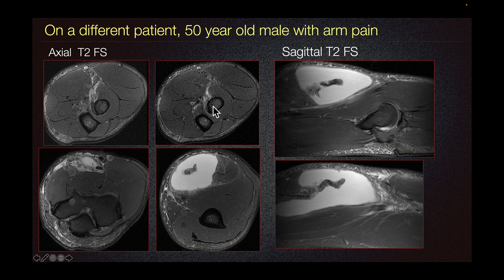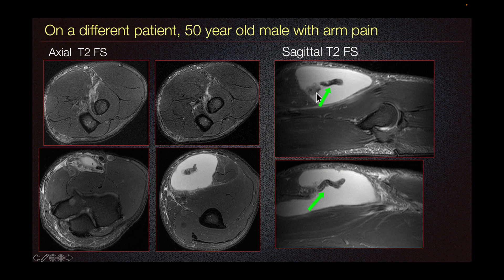Going proximally, we still don't see it. At the level of the elbow joint, we just see a lot of fluid and edema. At the level of the distal humerus, we can see a hypointense band surrounded with large fluid, likely a hematoma, consistent with retracted biceps tendon. On our sagittal T2 fat-sat imaging, this is better depicted showing this hypointense curvilinear line, which is the retracted biceps tendon with surrounding hematoma and edema, consistent with biceps tendon tear.